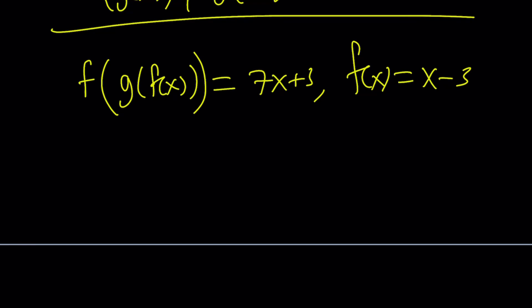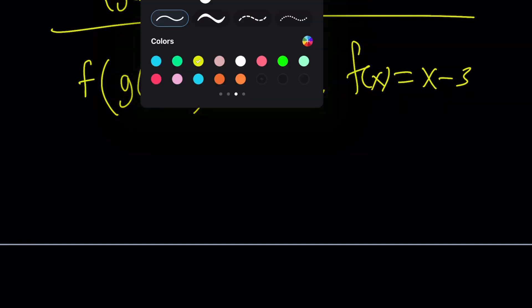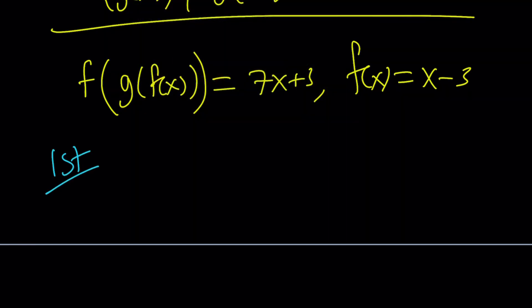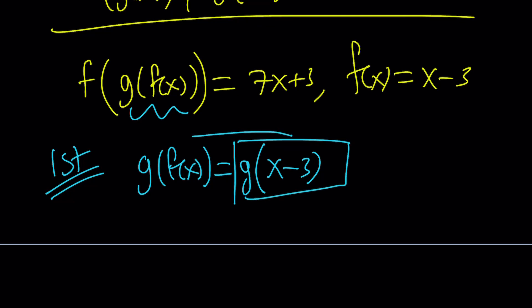So let's go ahead and talk about two approaches. Let's call them first and second method. The first method will be the following. I'm going to go ahead and evaluate this first. What is g of f of x? g of f of x means g of x minus 3 because I know what f of x is, so I can do that.